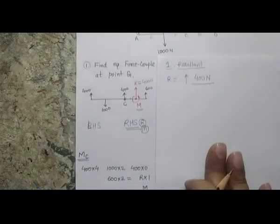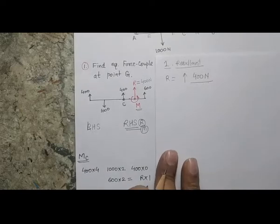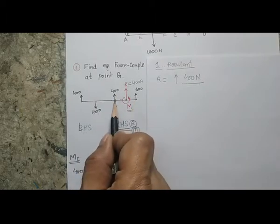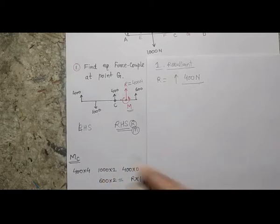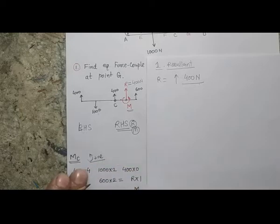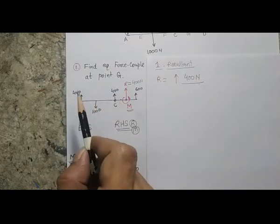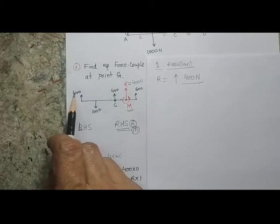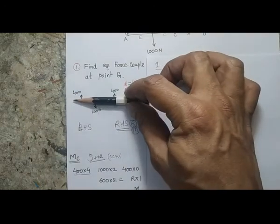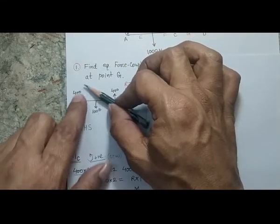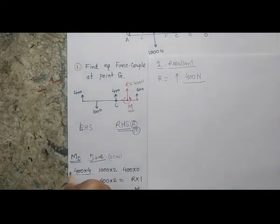At point C, the moment equation involves: 400 × 4 (distance from A), 1000 × 2 (distance from B), 400 × 0 (at C, no effect), and 600 × 2 (distance from D). My sign convention: counterclockwise is positive. The 400 N upward force at A gives clockwise rotation at C, so it's negative.